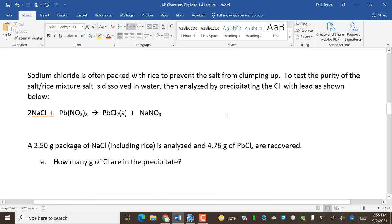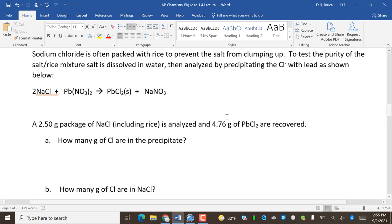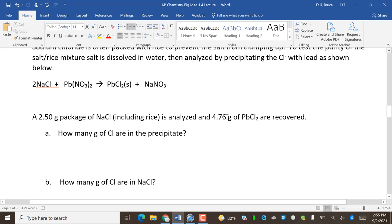Sodium chloride is often packed with rice to prevent the salt from clumping up. To test the purity of the salt-rice mixture, salt is dissolved in water then analyzed by precipitating the chloride with lead as shown below. I admit I made up this question. I thought, dude, you can just filter the rice out after I wrote this, but I'm rolling with it. We'll pretend that that wasn't true. But here's the reaction that we'll do. And I did this because I want to do some percent composition. 2.50 gram package of sodium chloride, including rice, is analyzed and 4.76 grams of lead chloride are recovered. 4.76. Maximum was 2.50.